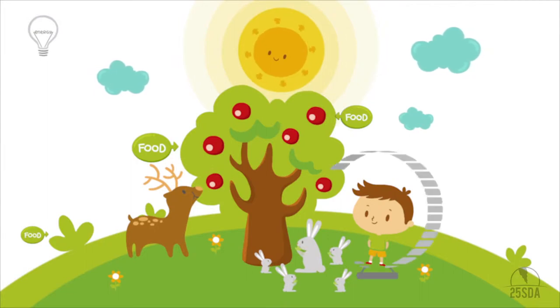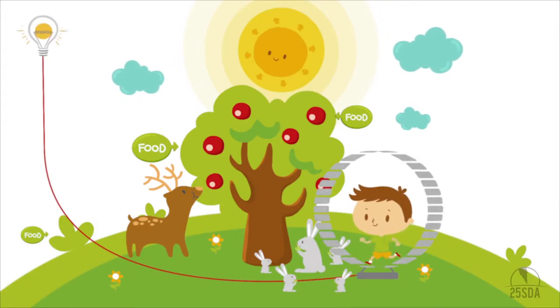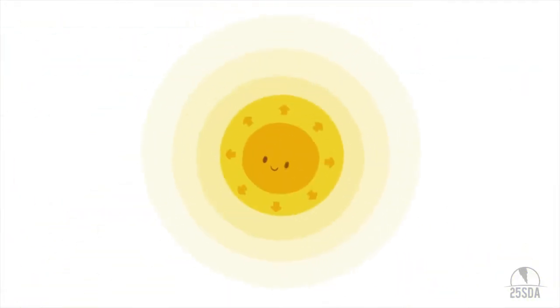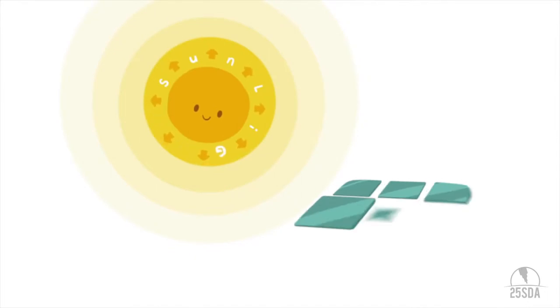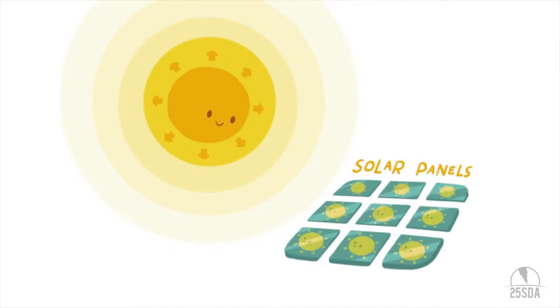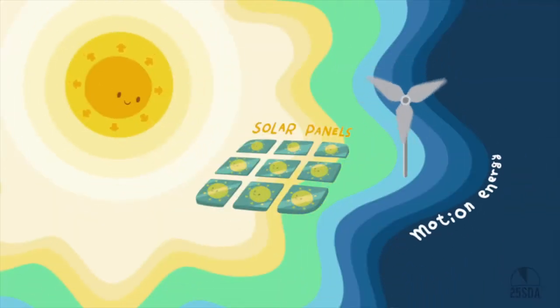Almost anything that moves can be used to create energy, enough to run machines and turn on the light. Energy from the sun can generate electricity using solar panels. We can also use wind for motion and energy.